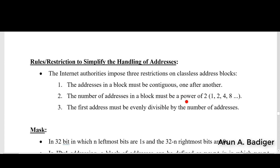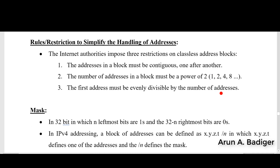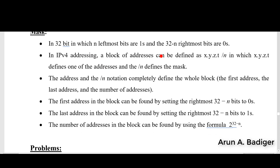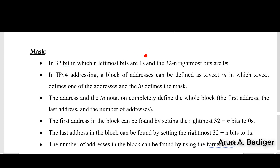The second rule: the number of addresses in the block must be a power of 2 — the total must be a multiple of 2. It cannot be an odd number; it should be an even number like 2, 4, 8, or 16. Also, the first address must be evenly divisible by the total number of addresses.